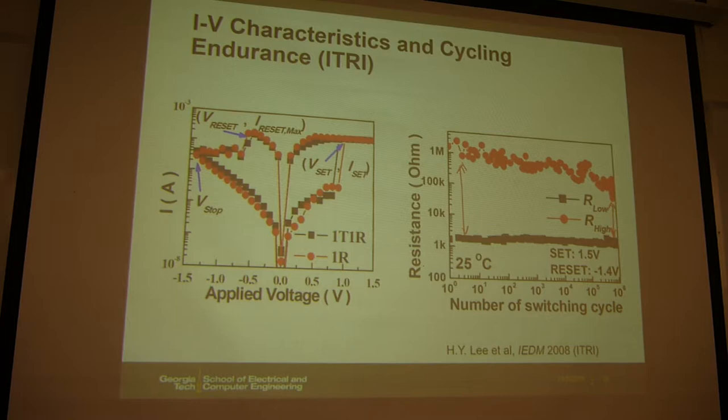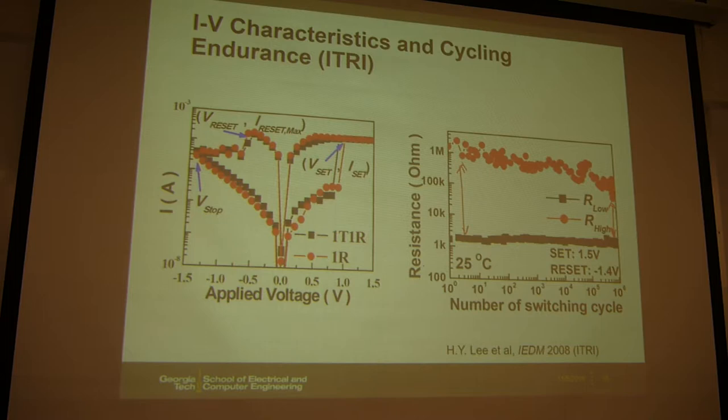Question: Will you change the memory resistance when you try to measure it? Answer: When you read, you always use a small voltage — for all memory cells, reading uses small voltage while writing uses large voltage. Set and reset use large voltage like 1.5V, whereas reading probably uses only about 0.2V.